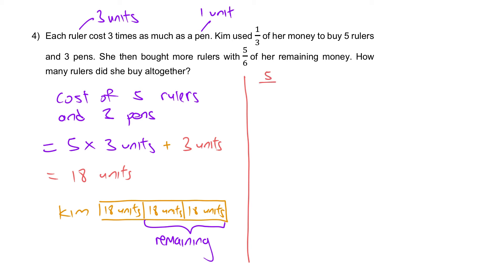Five out of six of her remaining money is equal to five out of six of what? Of 36. So 36 units here - there will be 30 units worth of money.